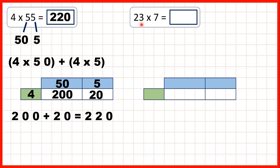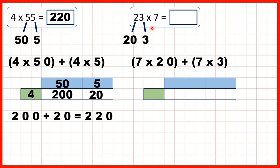Now, we have 23 times 7. Again, we're going to start by partitioning our two-digit number. 23 is 20 and 3. So we can multiply 7 by 20, then multiply 7 by 3, and add up our answers. So on our grid, again, we can write our single-digit number on the left, and our partitioned number — so 20 and 3 on top.